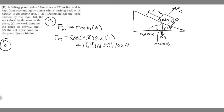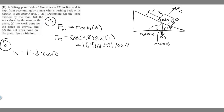Now for part (b): the work done by the man on the piano. Work is measured in joules and equals force times distance times the cosine of theta, where theta is the angle between the force direction and the direction of motion.